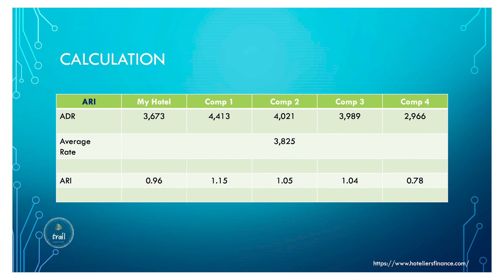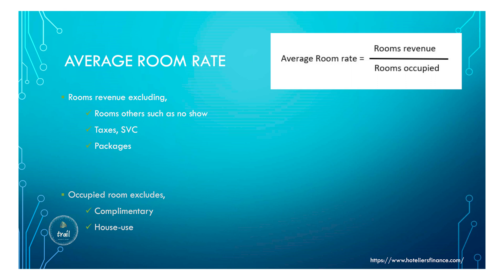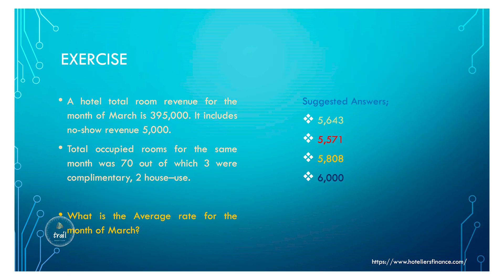The average rate of a hotel is calculated by taking room revenue divided by rooms occupied. We must be careful: room revenue must exclude taxes, service charges, packages, and any other revenue such as no-shows. Occupied rooms exclude complementary and house use rooms. Once these are removed, we can calculate the average room rate.